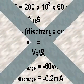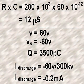The time constant equals R times C, or 200 times 10 to the third times 60 times 10 to the minus 12, or 12 microseconds. At T0, V equals 60 volts, V sub R equals minus 60 volts, and Q equals 3500 picocoulombs.